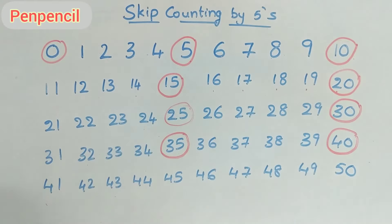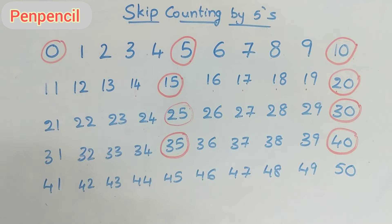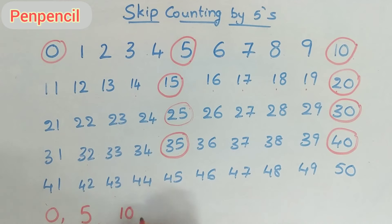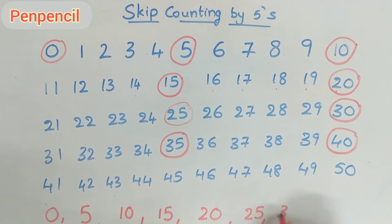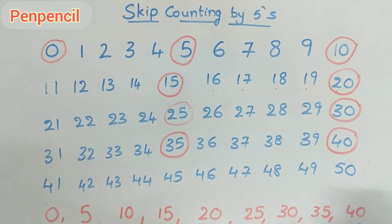Next is forty. The next two you have to do on your own. Now let's write once again what we have circled: the first number is zero, five, ten, fifteen, twenty, twenty-five, thirty, thirty-five, forty — and the last two you have to fill in yourself.